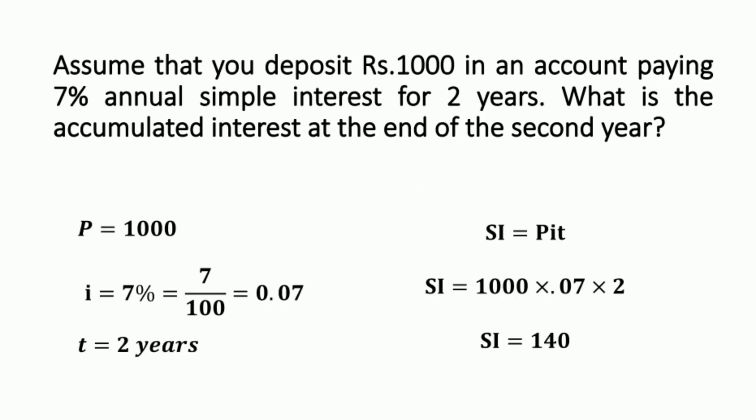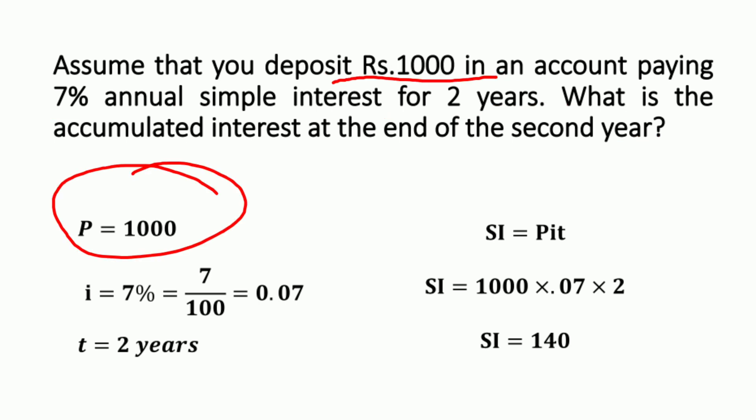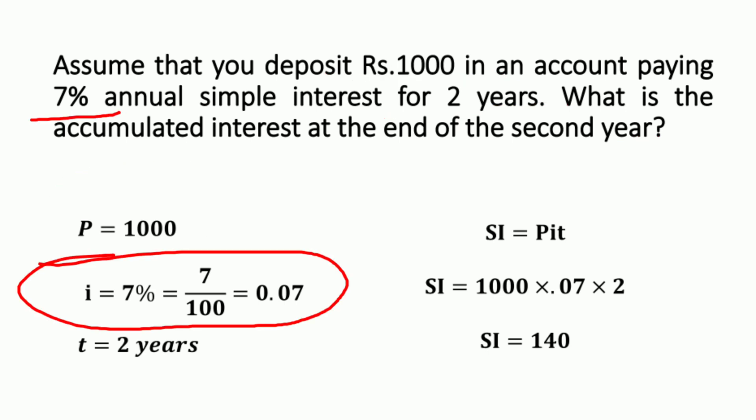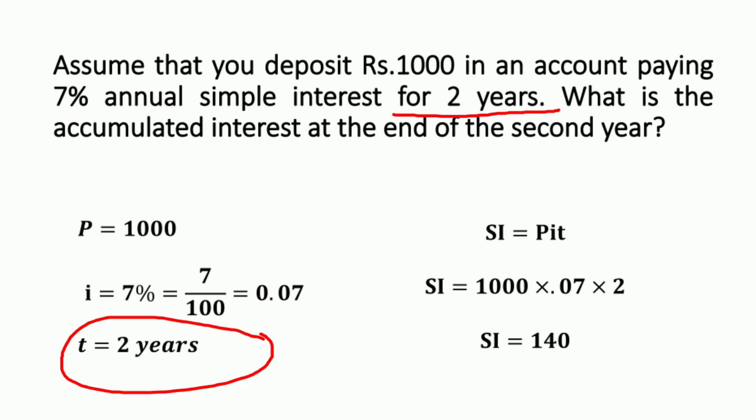For example, assume you deposit ₹1000 in an account paying 7% annual simple interest for 2 years. What is the accumulated interest at the end of the second year? From the given question, the principal amount P is ₹1000, the interest rate is 7%, which can be written as 7/100 = 0.07, and the time period T is 2 years.